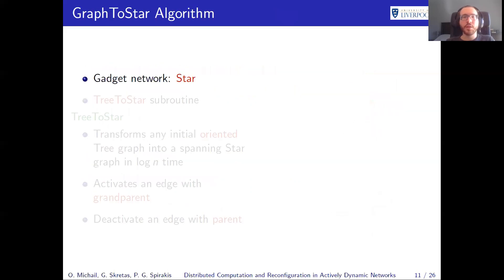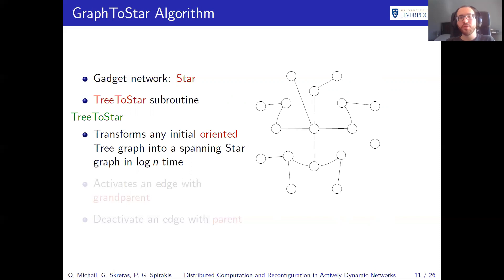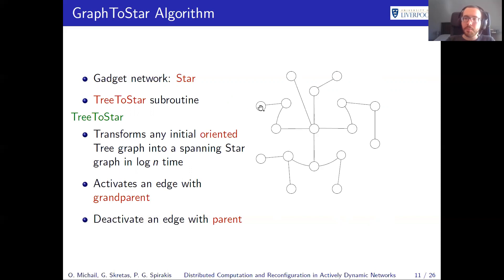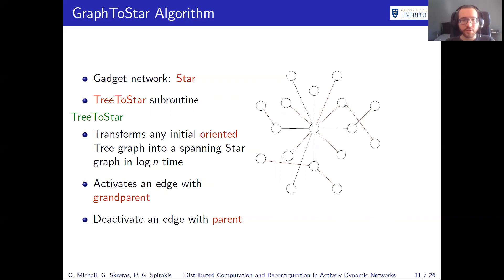The first algorithm is the graph-to-star algorithm. It takes any initial graph and transforms it into a star in logarithmic time, using a star as the gadget network. We use a subroutine called tree-to-star. This subroutine takes any initial oriented tree graph and transforms it into a spanning star in logarithmic time. In each round, every node activates an edge with their grandparent and deactivates an edge with their parent. This keeps happening — activate, deactivate, activate, deactivate — until we get our star.